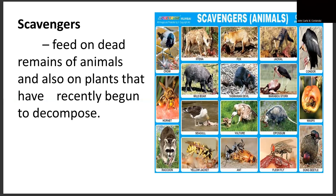We have a category known as scavengers, wherein they feed on dead remains of animals and also on plants that have recently begun to decompose. Examples include hyena, fox, jackal, marabou stork, opossum, vulture, seagull, hornet, and raccoon — their food source is actually in the state of decomposition.